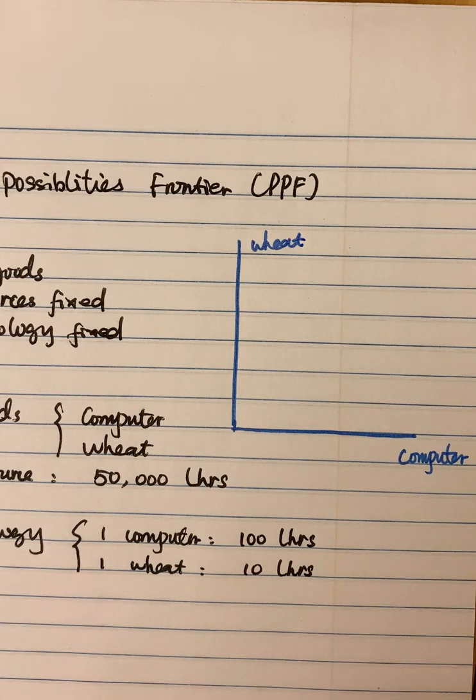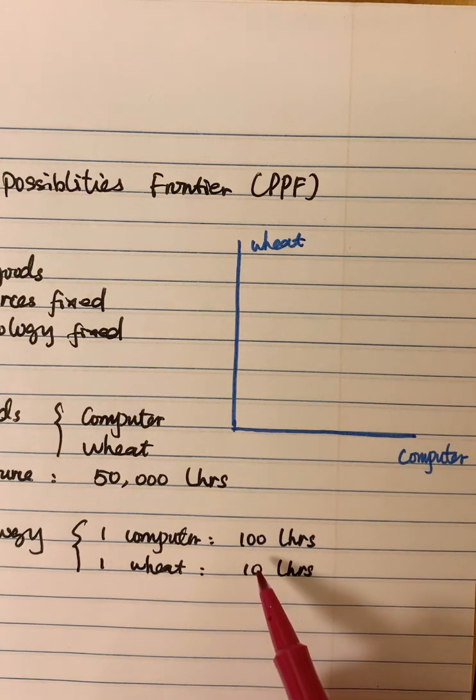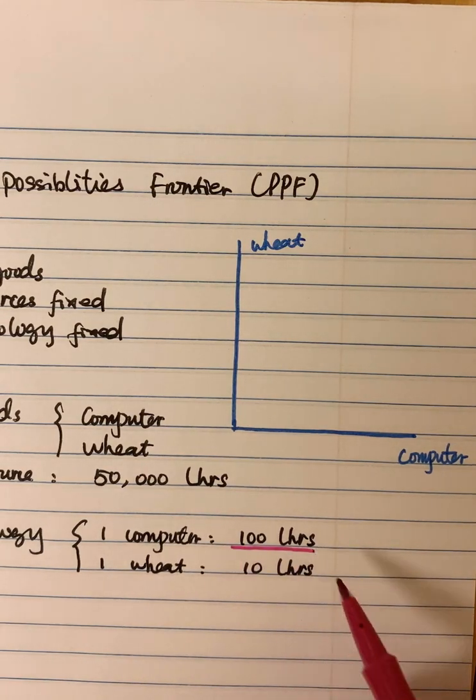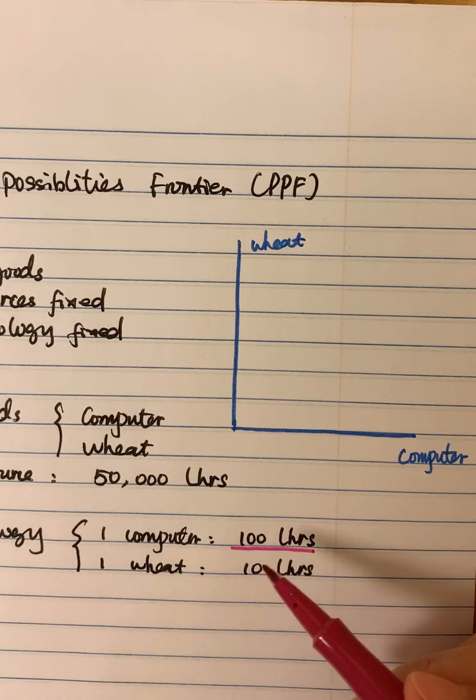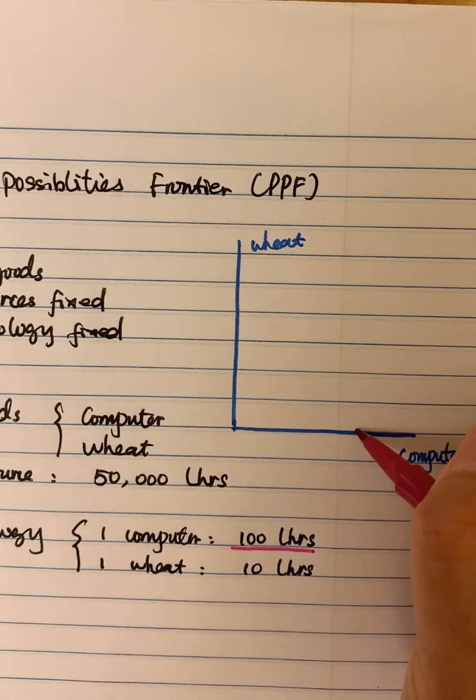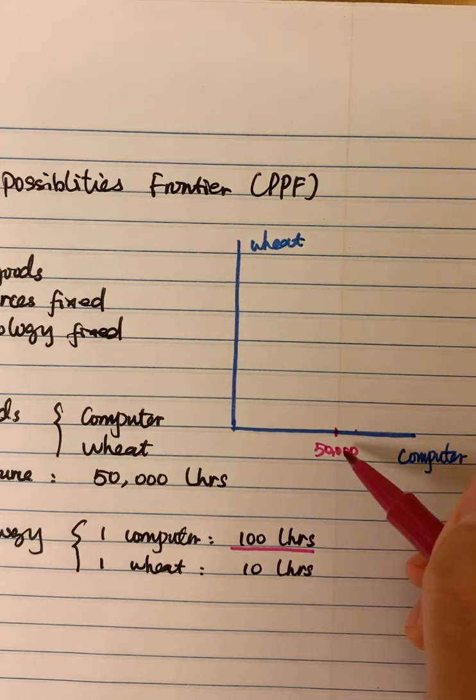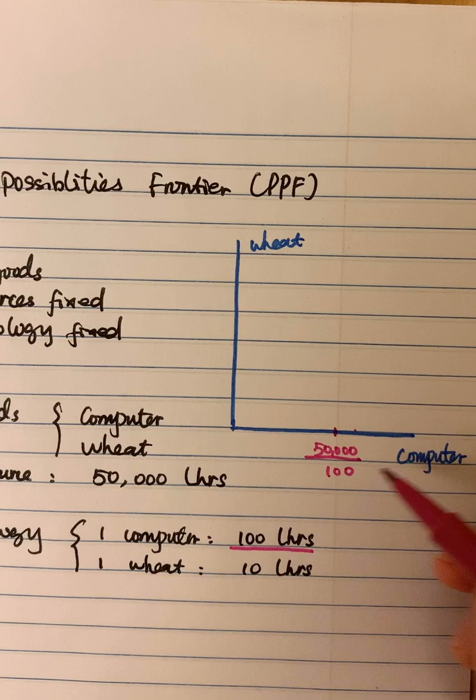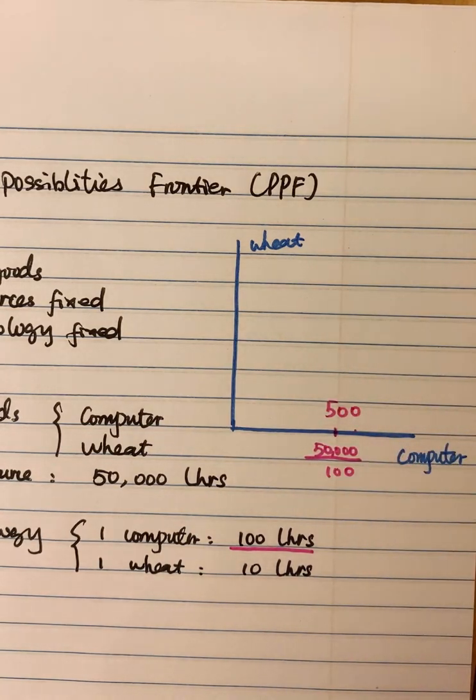And now we need to find two points. So the first point I want to find out is the maximum amount of computers that this economy can produce. We know producing one computer needs 100 labor hours. So if all the labor hours are used in computer production, we can have 50,000 labor hours just using in computer production, which will give us 500 computers.